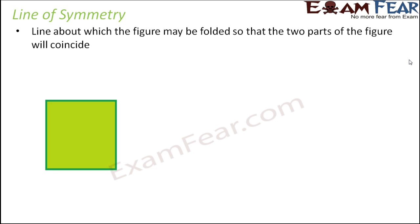Let us look at the example of a square. A square is a polygon with four equal sides and four equal angles of 90 degrees each. Consider this line — it divides the square into two equal identical halves which are mirror images of each other. These are the two equal halves, and placing a mirror along this line would confirm they are mirror images. So this is one possible line of symmetry for this square.